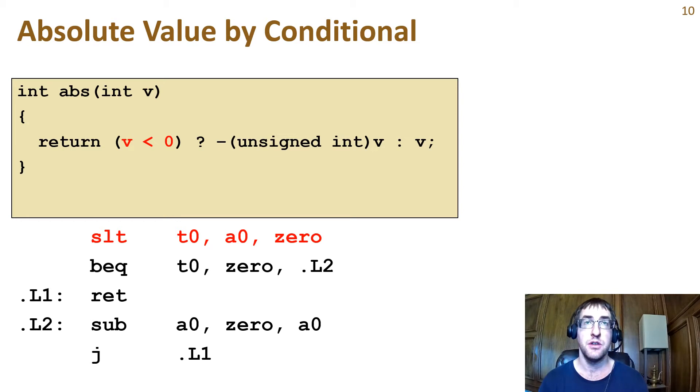We'll take a closer look at other ways to use SLT in the future. Looking at the C code, we see it is a ternary operator. If you're not familiar with this operator, it encodes an if-else condition in one line. The if block follows the question mark, and the else block follows the colon. So, if V is less than 0, the statement should result in the negative unsigned int of V, and if V is greater than or equal to 0, the statement should result in V.